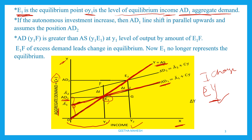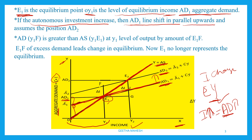Now, if autonomous investment increases, aggregate demand also increases. When aggregate demand increases, AD1 shifts parallelly upward and takes the position of AD2. The AD line shifts in parallel upwards and assumes the position of AD2. The demand curve has shifted upward.